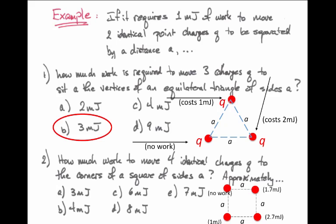If I add the total amount of work necessary to assemble this picture, I have 1 plus 1.7 plus 2.7 millijoules, or approximately the 6 shown in the choices. It's actually about five and a half.